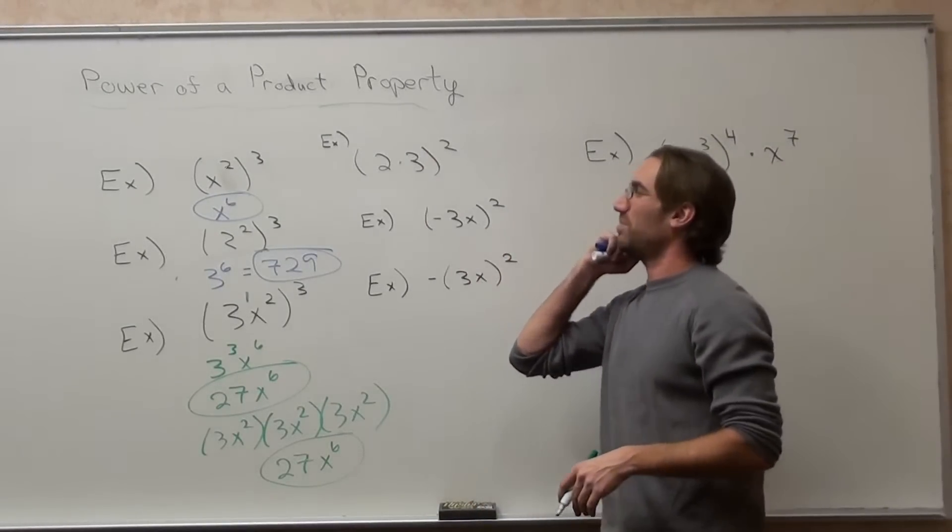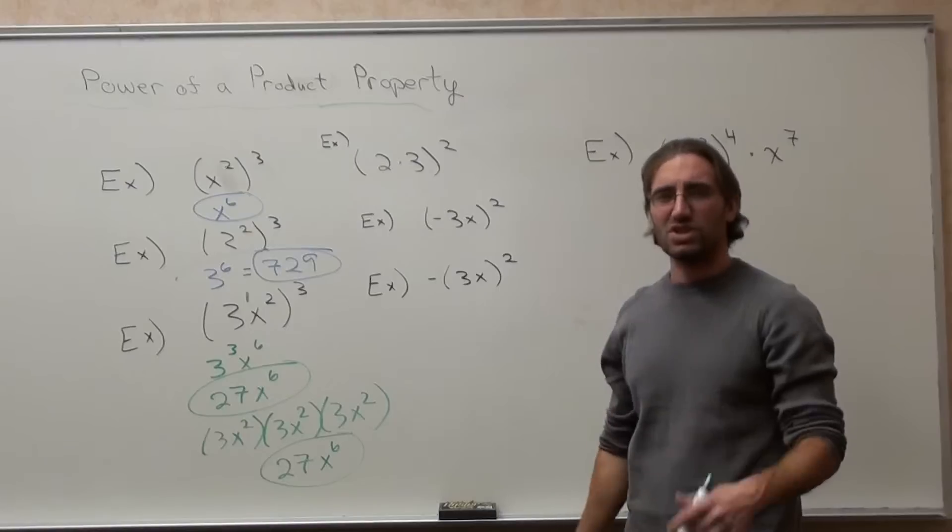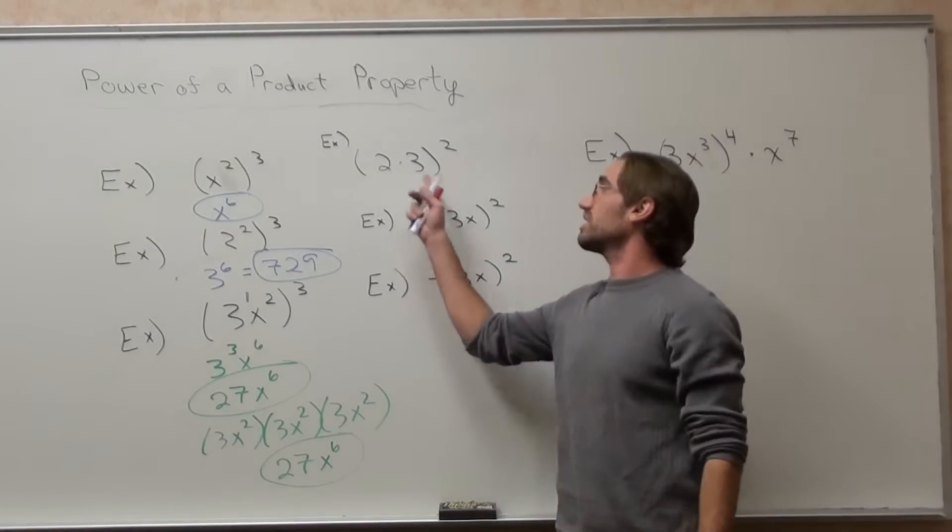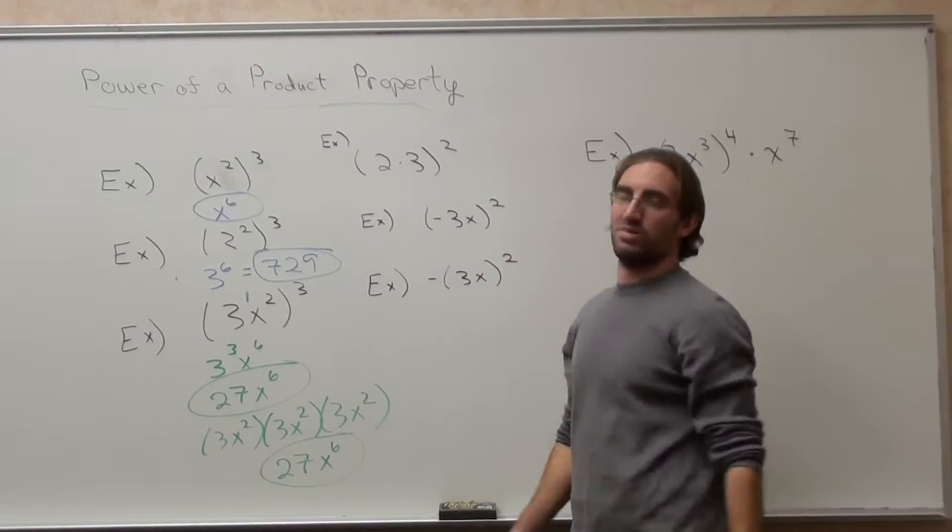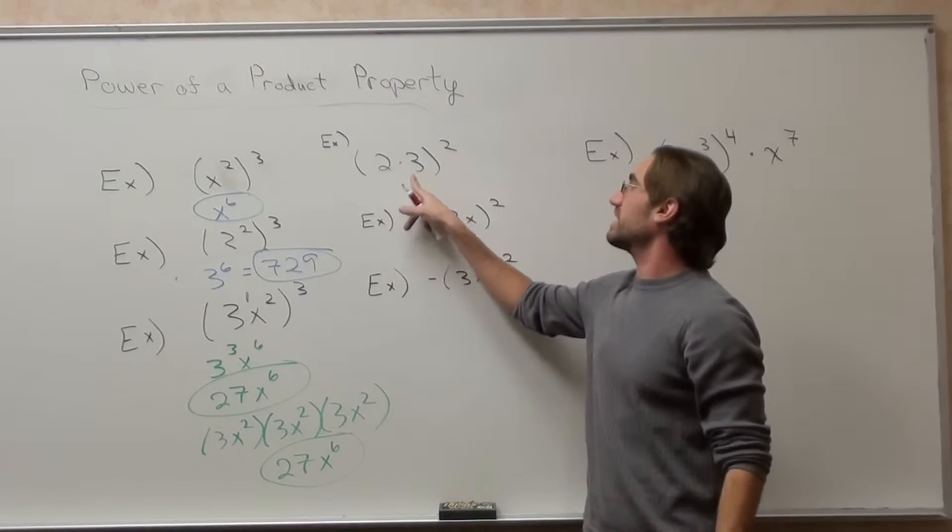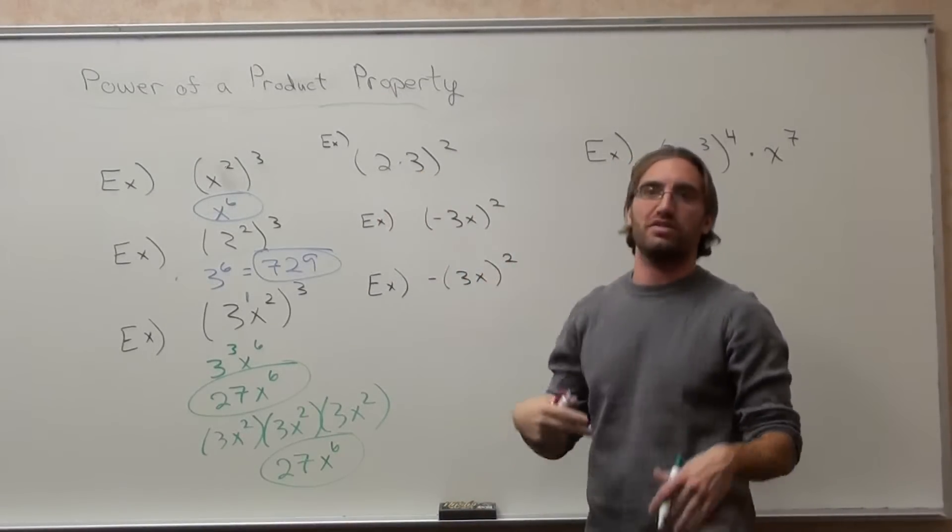This is a very interesting power of a power property. There's a couple ways you can do it. You can do what's in the parentheses first, which is what you're supposed to do, but it's always given as a power of a power property. 2 times 3 is 6. 6 squared is 36.